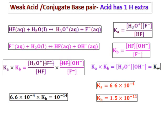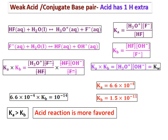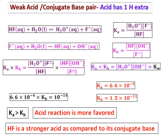To determine which is stronger — HF or F minus — compare the values of Ka and Kb. Ka is larger than Kb, meaning the reaction of HF with water giving H3O plus and F minus is more favored than the reaction of F minus with water. Therefore, HF acts as a stronger acid compared to its conjugate base F minus.